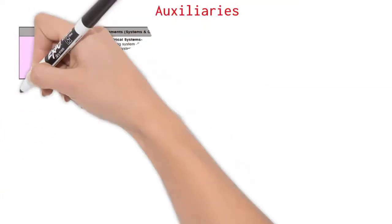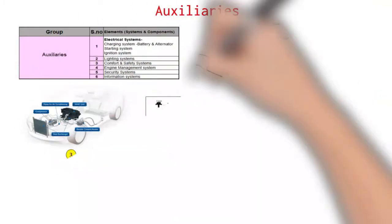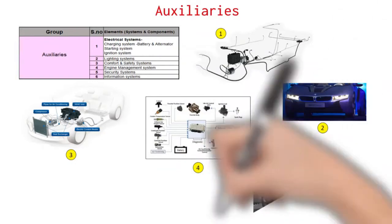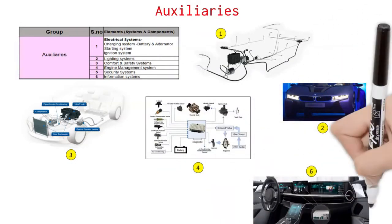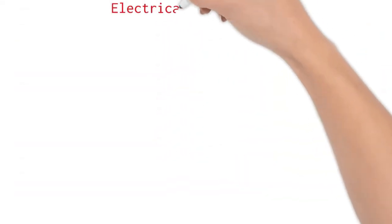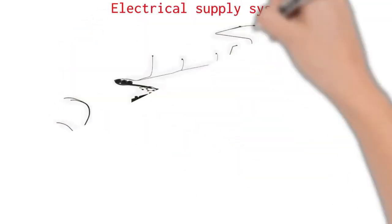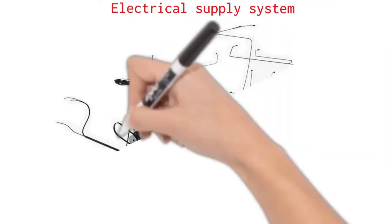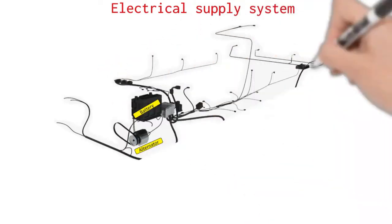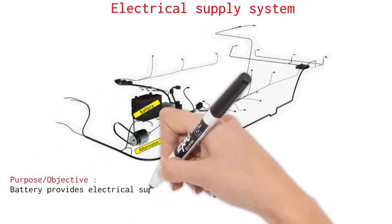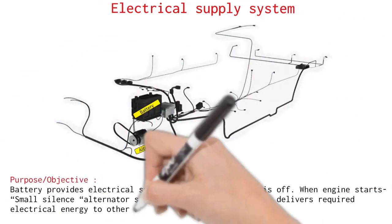The auxiliaries. Auxiliaries refers to the electrical equipment which is common for all type of vehicles. The engine provides power to move the vehicle. However, electricity powers most of the devices on the vehicle. Auxiliaries are classified as follows. Electrical supply system. There are two sources of electrical supply in a vehicle which are battery and alternator. Battery provides electrical supply when the vehicle engine is off. When the engine starts, alternator starts charging battery and also delivers required electrical energy to other electrical components.